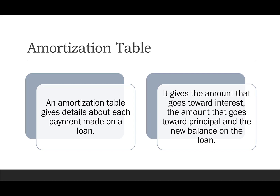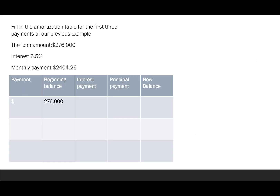When paying off a loan, there's something called an amortization table that tracks the details of each payment — how much goes toward interest, how much goes toward principal, and the new balance. Let's use a loan of $276,000 at 6.5% interest with monthly payments of $2,404.26.